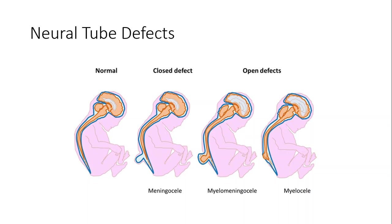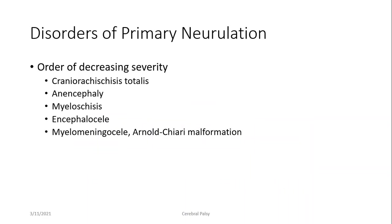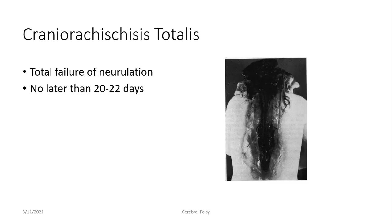Neural tube defects can be closed — with protrusion of CSF and meningeal coverings as a meningocele without involvement of CNS tissue — or open defects where you have protrusion of central nervous system tissue as in myelomeningocele or myelocele. In order of decreasing severity, the most severe situation involves total failure of neurulation where the neural tube completely fails to close in both caudal and rostral directions. This is a very early defect occurring no later than 20 to 22 days of gestation, and these cases are mostly stillborn.